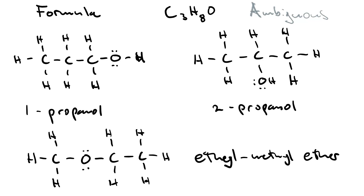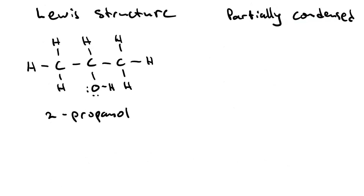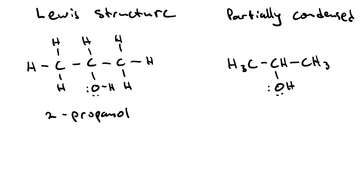You probably got tired of waiting for me to draw all those hydrogens — they really do take a while. That's why a condensed structure, or a partially condensed structure, is nicer. By the way, the structures I've just shown are Lewis structures. For the partially condensed structure, we can go H3C to CH to OH to CH3, and if we're feeling like it, we can draw in the lone pairs. That takes a lot less time because you're not drawing in every single hydrogen — you're using subscripts. A partially condensed structure is much more friendly, and it contains all the information that a Lewis structure does.